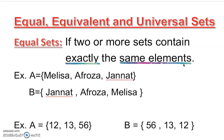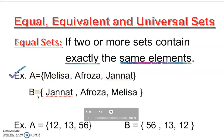The 'same element' means the members must be the same. For example, I have three students: Melissa, Afroza, and Jannath sitting in the front row from left to right. That is set A. Now if I rearrange them — Jannath on the left, Melissa on the right — the ordering is different, but it's exactly the same students. The count is one, two, three on both sides. This is called an equal set.